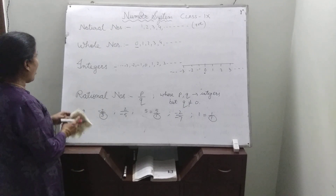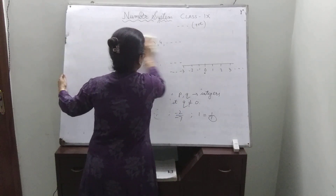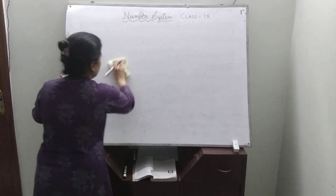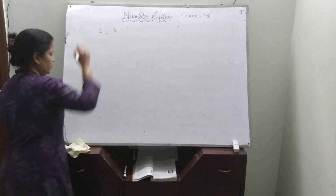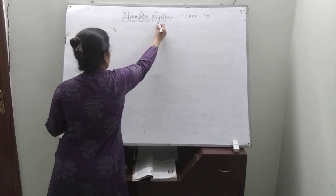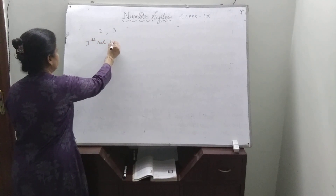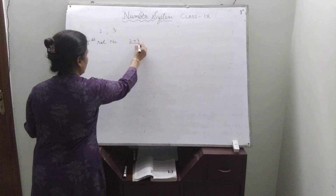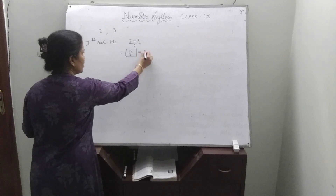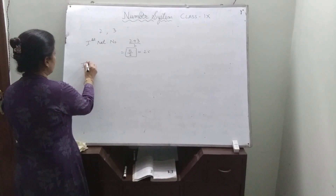Now we will try to understand how many rational numbers we can find between 2 numbers. Suppose the numbers are 2 and 3. Between these 2 numbers we have to find out rational numbers. The method: for the first rational number, add these 2 numbers together and always divide by 2. You will get 5 upon 2, which equals 2.5, and 2.5 comes between 2 and 3. So this is the first rational number.